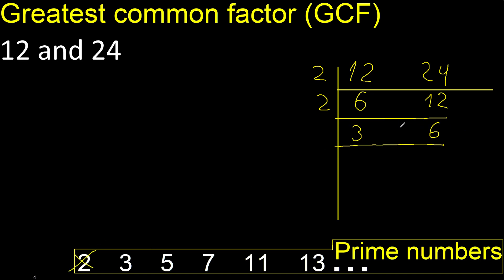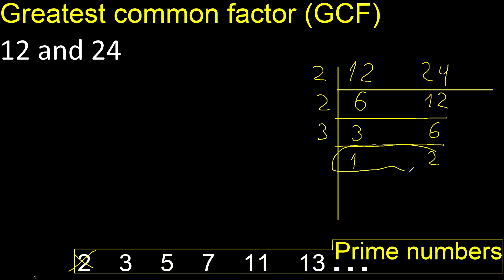Divided by 3. Yes. 3 divided by 3 is 1, 6 divided by 3 is 2. Finish, because 1 and 2 cannot be divided by the same number.